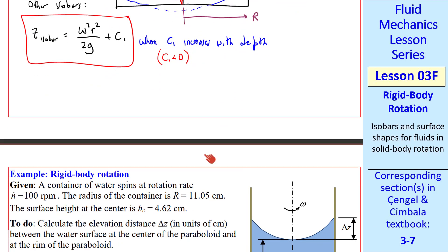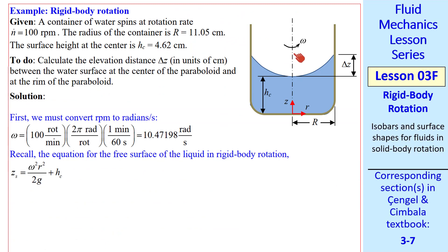Let's do an example. We have a container of water spinning at some rotation rate. We give it an rpm. We give the radius of the container and hc. In this problem, we want to calculate the elevation distance delta z, which is shown here, between the water surface at the center and at the rim.